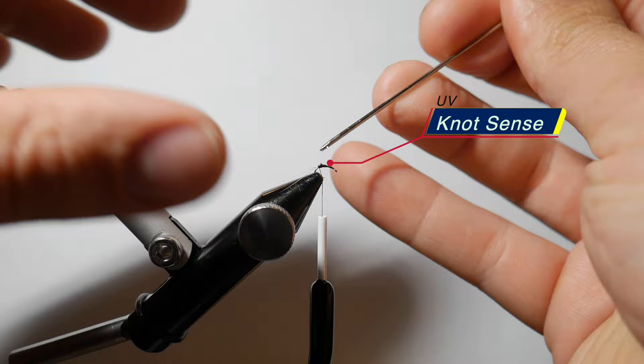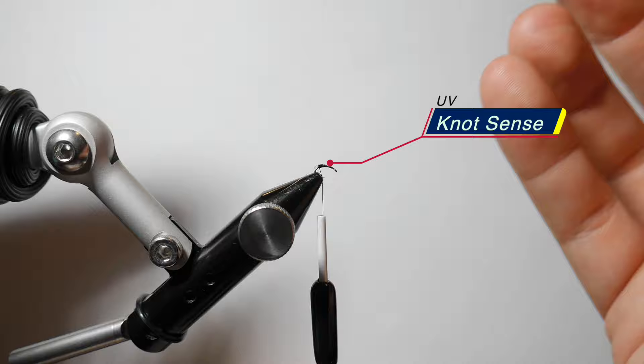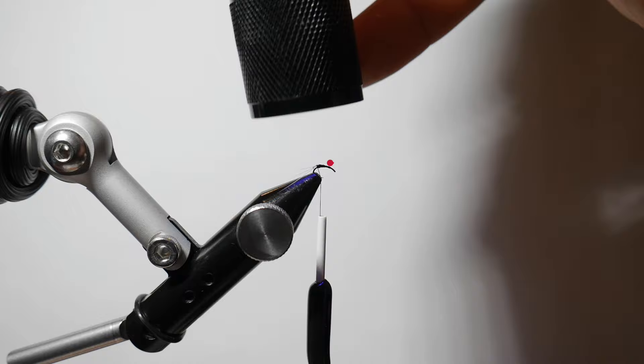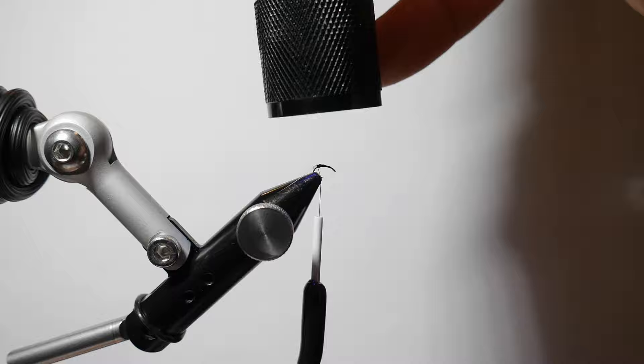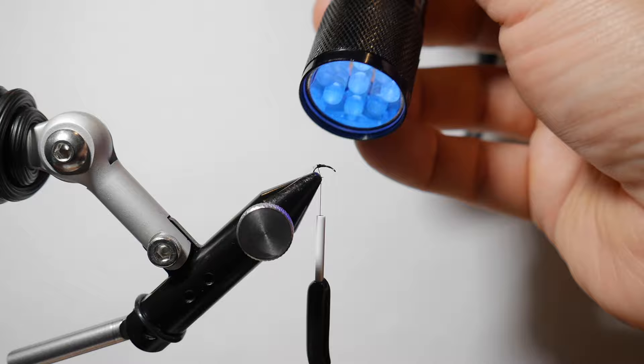So we're going to dab that little Knot Sense on there and then hit it with this UV light just to really cure it and make sure everything's settled. That little trick I gained from Tim Flagler from Tightline Video, a really professional fly tyer that always has some tips and tricks that I find myself using more often than not.